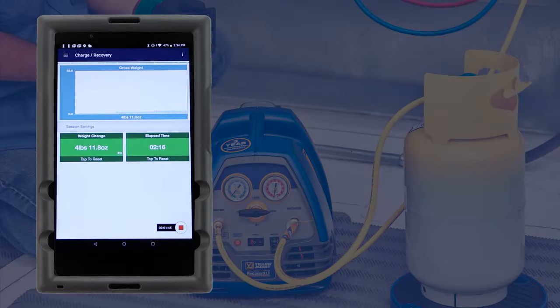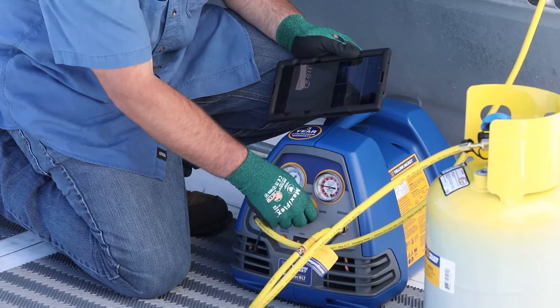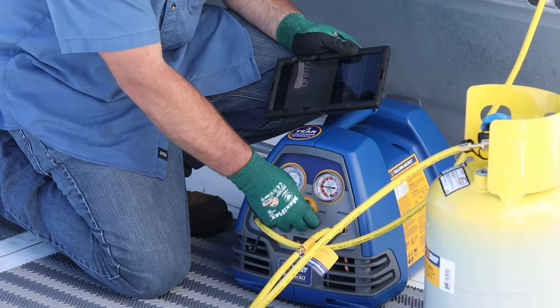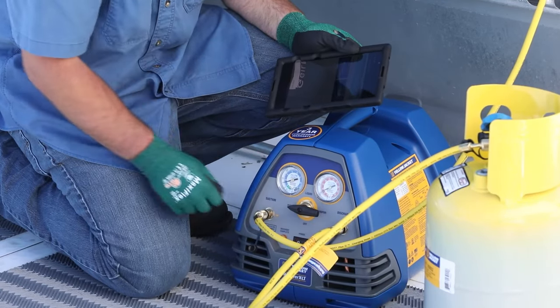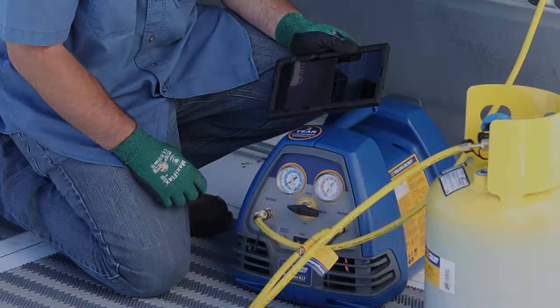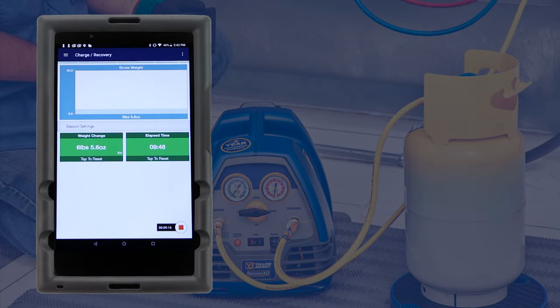Once the system has reached the proper vacuum level, the Recover XLT will automatically power off. Turn the valve to the purge position to purge any refrigerant that is settled in the recovery machine condenser. This is a unique feature you won't find on other recovery machines.